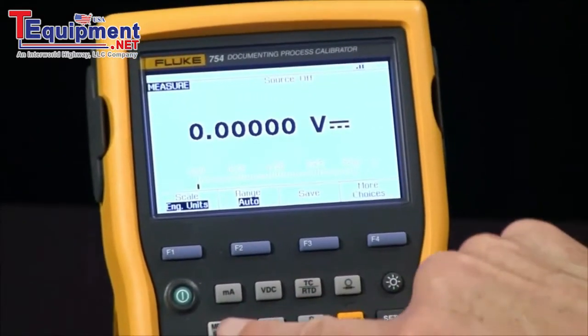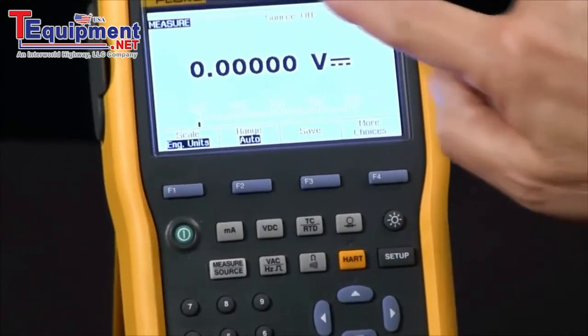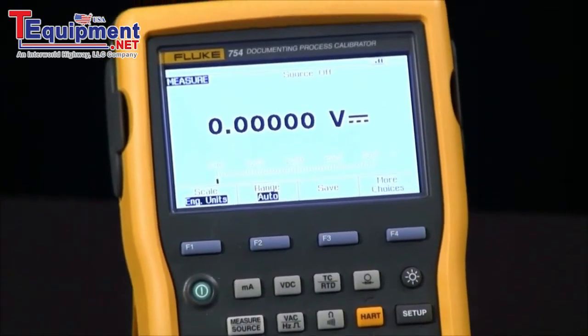it comes up in the measure screen. There are three screens: measure, source, and a split screen that has measure and source. We're in the correct screen to measure an RTD.